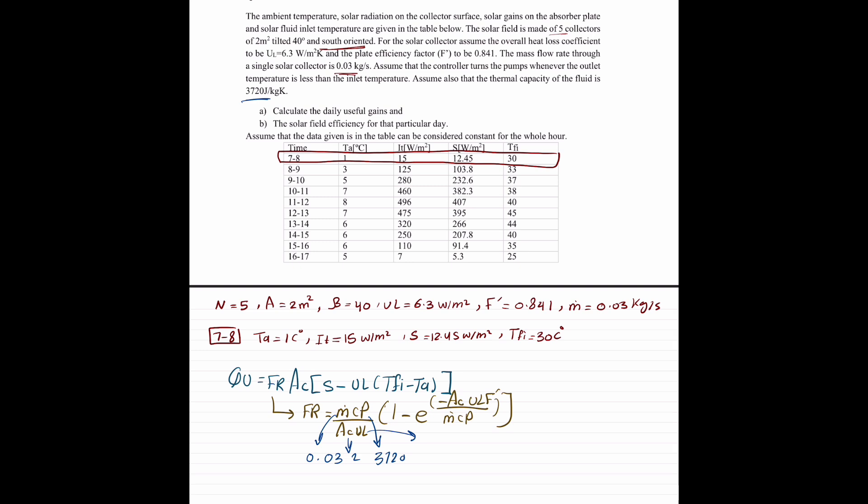UL is 6.3. And this F prime is 0.841. Substitution, we have a value of 0.8023.